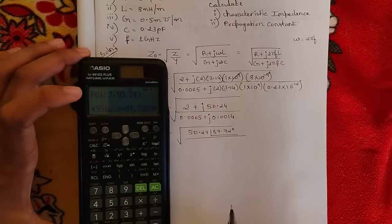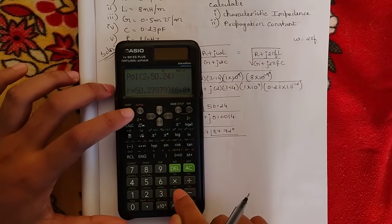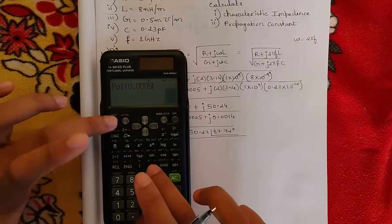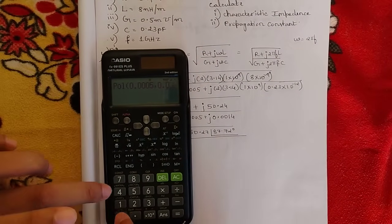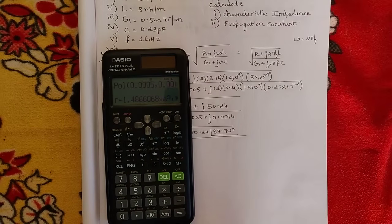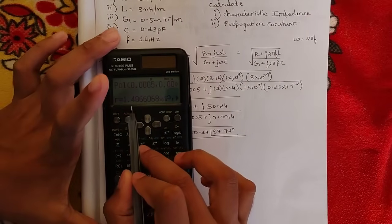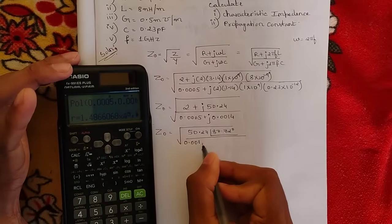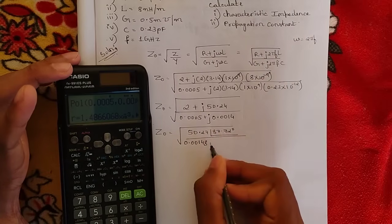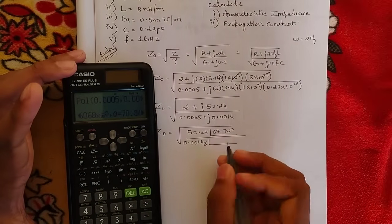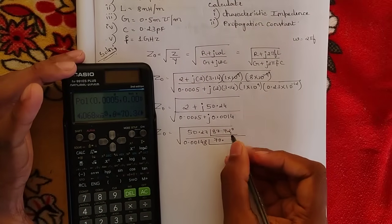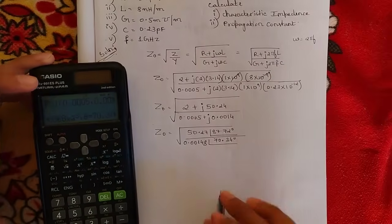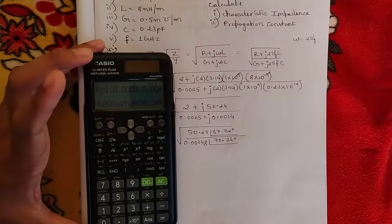For the denominator, polar of (0.0005, 0.0014) gives a magnitude of 1.486×10⁻³ — written as 0.00148 — at a phase angle of 70.34 degrees.